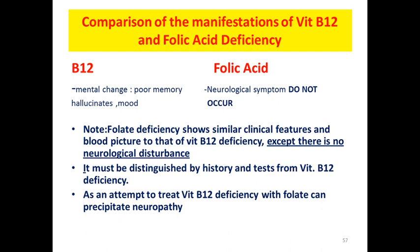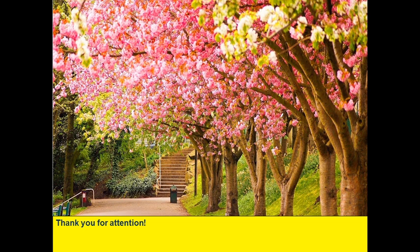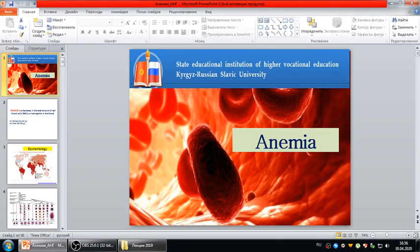Folate deficiency shows similar clinical features and blood picture to that of vitamin B12 deficiency, except there is no neurological disturbance. Everything is similar but there is no neurological disturbance. It must be distinguished by history and testing from vitamin B12 deficiency, as attempting to treat vitamin B12 deficiency with folate can precipitate neuropathy. Each of these anemias should be treated for a prolonged period. Thank you for your attention.